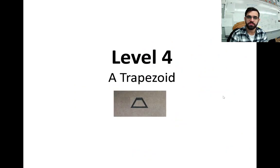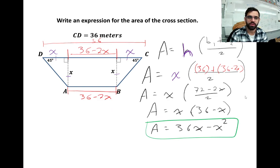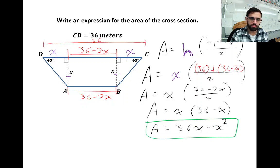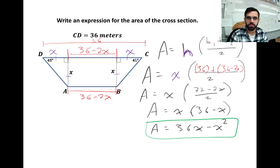This one's for fun — a trapezoid. Write an expression for the area of the cross section. This probably isn't the only way to solve this, but here's how I saw it. CD has a length of 36 cm, and we also have a length x, which is the height of the trapezoid. We can write an equation in terms of x to represent the area.